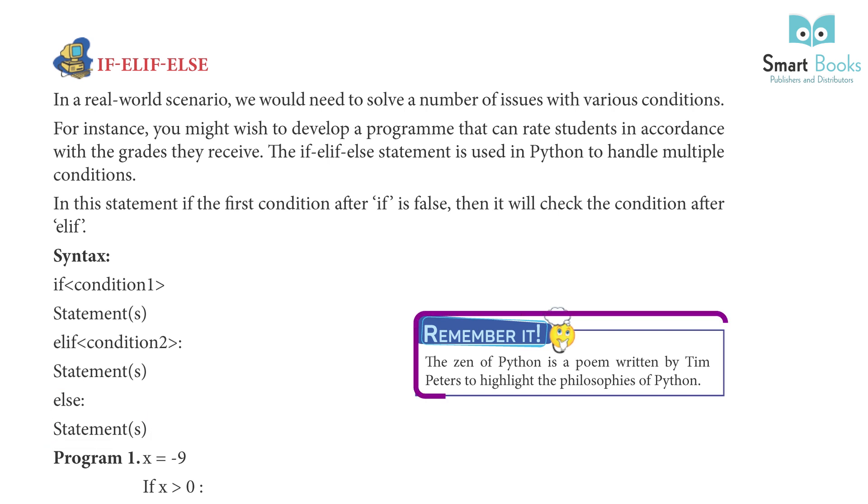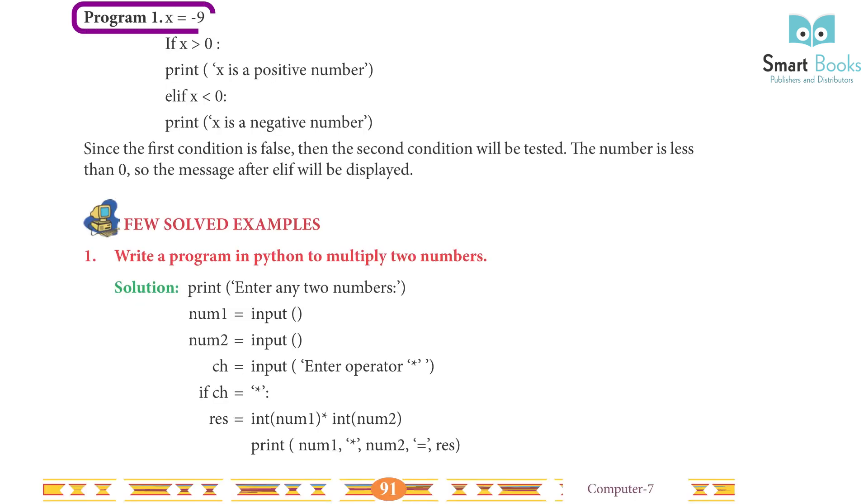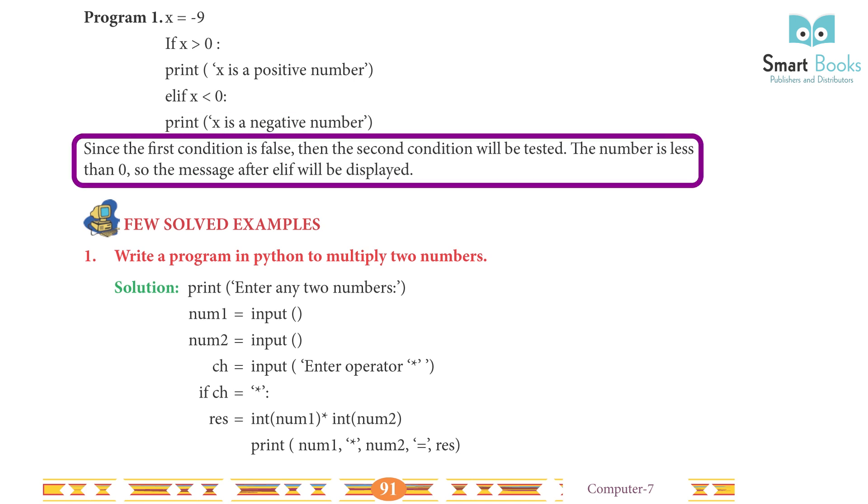Remember it: The Zen of Python is a poem written by Tim Peters to highlight the philosophies of Python. Program 1: x = -9. If x > 0: print 'x is a positive number'. Elif x < 0: print 'x is a negative number'. Since the first condition is false, the second condition will be tested. The number is less than 0, so the message after elif will be displayed.